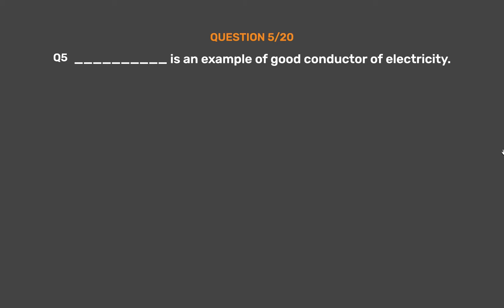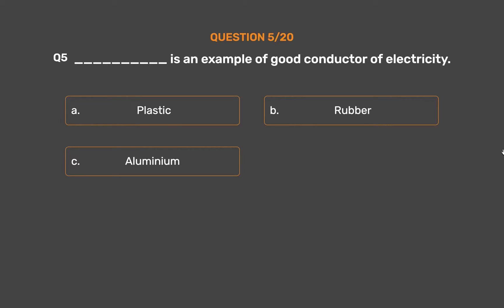Question No. 5: Underscore is an example of a good conductor of electricity. Option A: Plastic. Option B: Rubber. Option C: Aluminium. Option D: Wood.